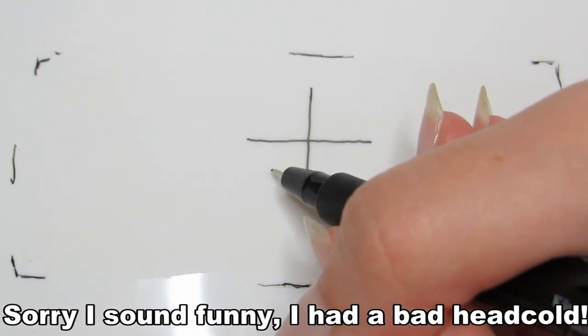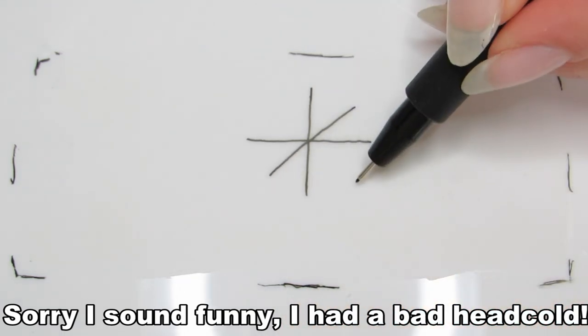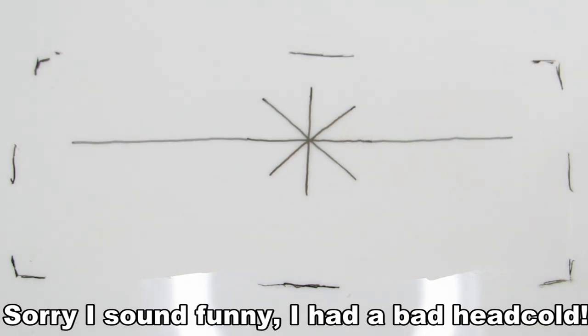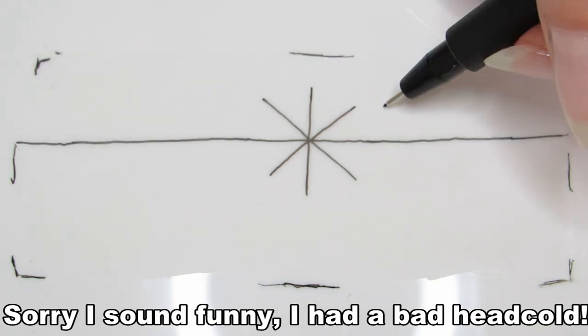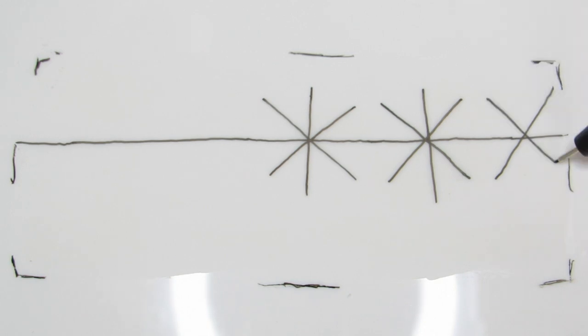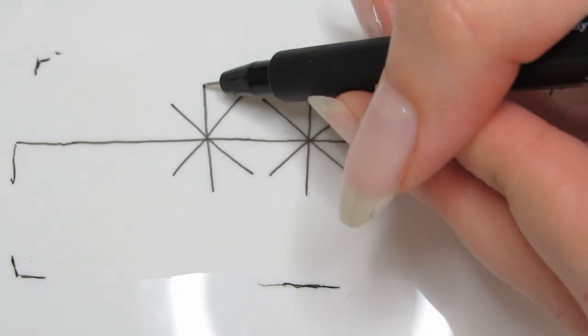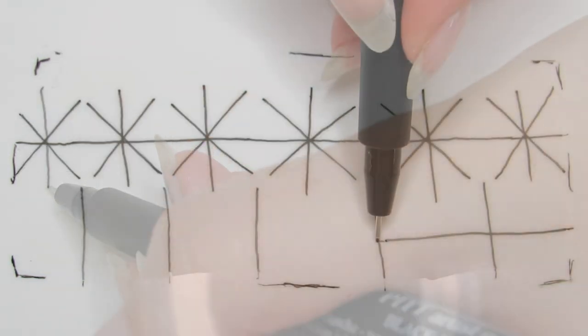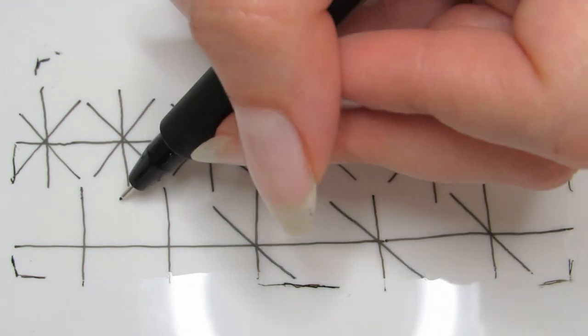With a fine-tipped sharpie or marker, draw a cross in the center of your rectangle. Then draw an X in the cross, making sure all the angles are even. Extend your horizontal line and finish the pattern by drawing crosses and Xs on the horizontal line, and repeat the pattern below.